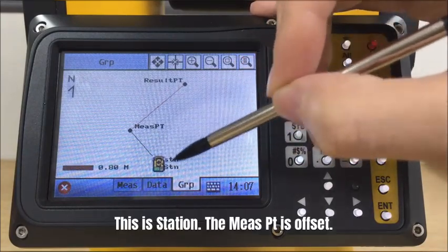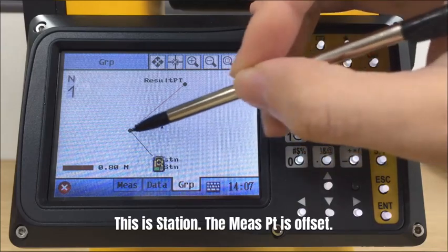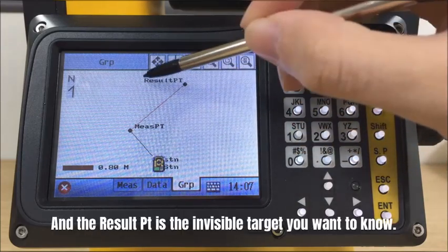This is the station, the measure point is offset, and the result point is the invisible target you want to know.